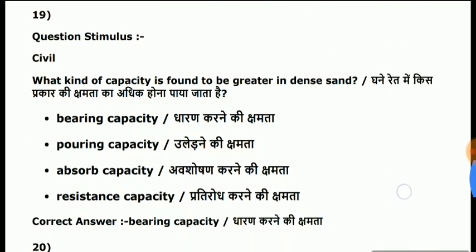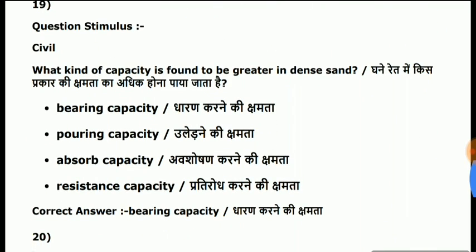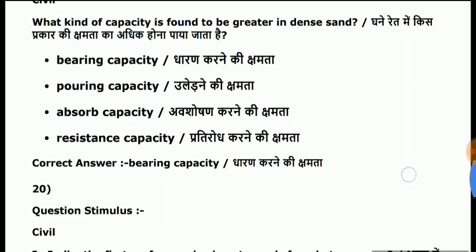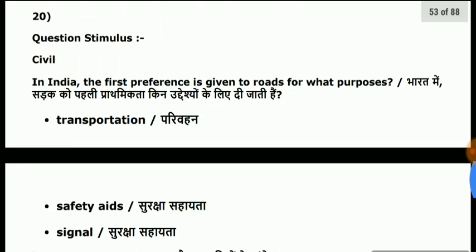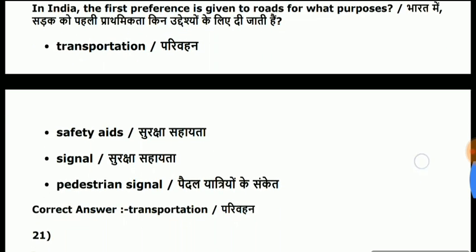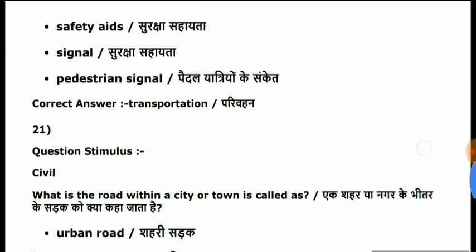Question 19: what kind of capacity is found to be greater in dense sand? Answer is bearing capacity. Question 20: in India, the first preference is given to road for what purposes? Answer is transportation.